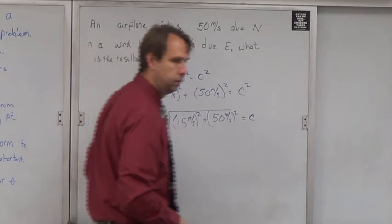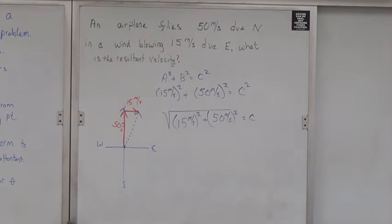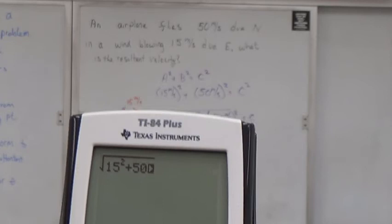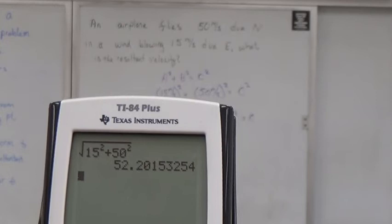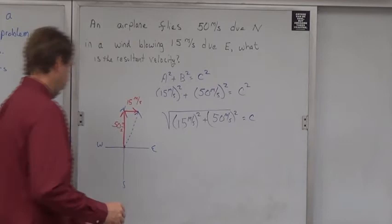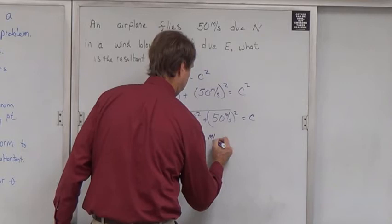So I'm going to go ahead and put that in the calculator. I have the square root in, and I'm doing 15 squared plus 50 squared all under the radical. And we get 52.20153254. What should we do with that? We only have two sig figs. So 52 meters per second equals c.